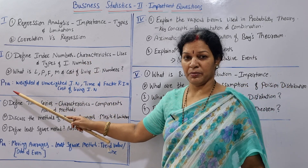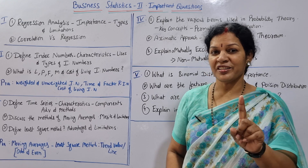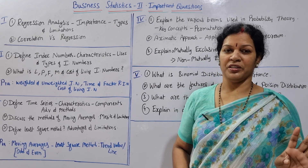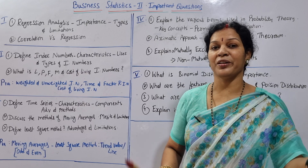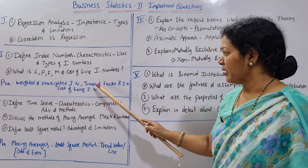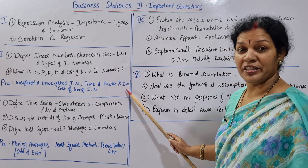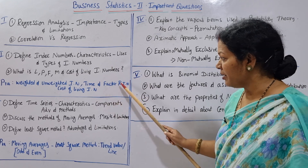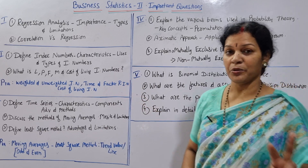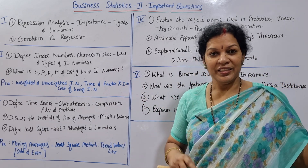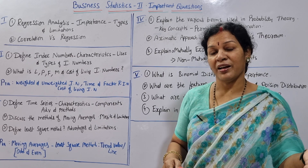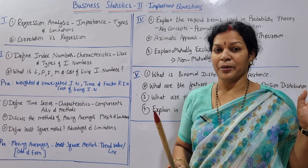For practicals: Weighted Index Numbers and Unweighted Index Numbers — explain the difference. Weighted and unweighted calculations are important. Also: Time Reversal Index Numbers and Factor Reversal Index Numbers — these are the two key tests. If you have data, you should be able to satisfy the Time Reversal Test and Factor Reversal Test. This is very important.